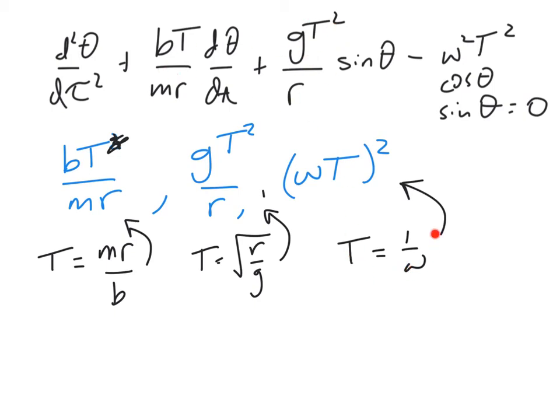And it's most convenient to define it this way. We could do it differently and we will get the same results no matter what we choose for capital T. But I would choose this one because it's the simplest expression. So let T equal 1 over omega.